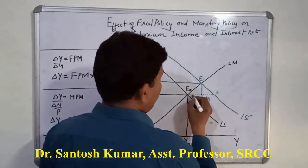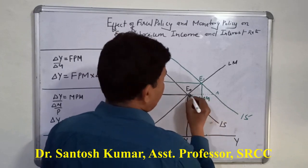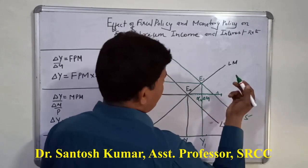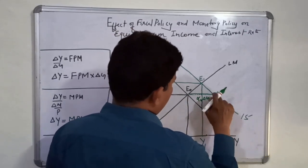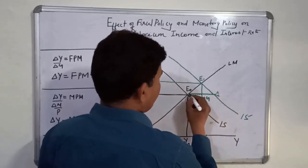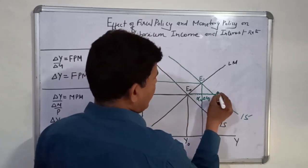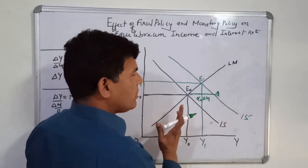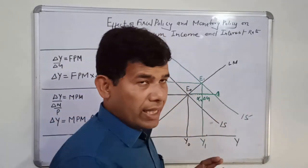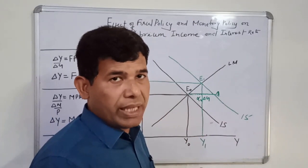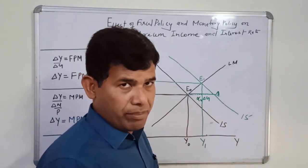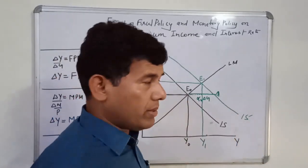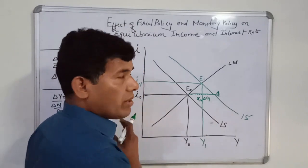Suppose the LM curve shifts rightward to the extent of E0 A. Rather than shifting the IS curve, we are now shifting the LM curve to the right side. We know that the LM curve location is affected by change in real money supply. In case if there is a rise in money supply, LM curve shifts rightward. If there is a fall in money supply, LM curve shifts leftward.